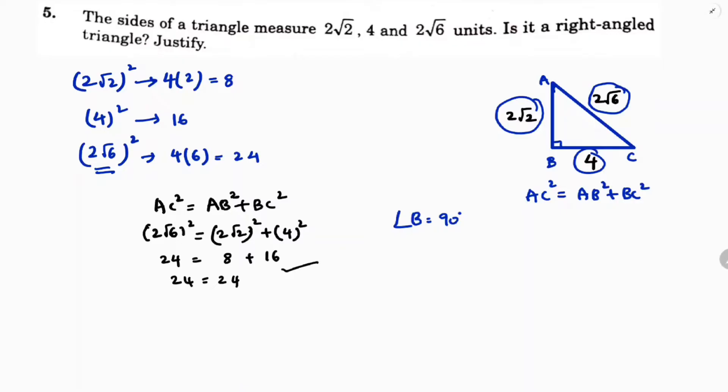Because if you consider AC as hypotenuse, is it a right angle triangle? Yes, it is a right angle triangle. And if you consider triangle ABC, the right angle is at B.